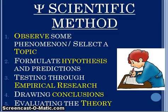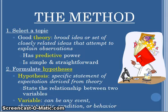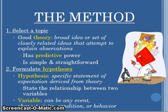Number four is we draw conclusions and number five is we evaluate the studies. In the first step — selecting a topic — we want to look at a good theory. A good theory has predictive power, it is simple and straightforward, and it is about a broad set of closely related ideas that attempt to explain some sort of observation. We want to formulate hypotheses, which are specific statements of expectation, and usually in a hypothesis we're going to state the relationship between the two variables.